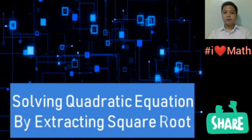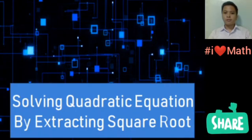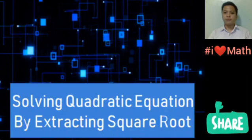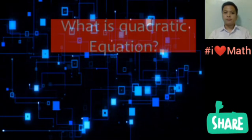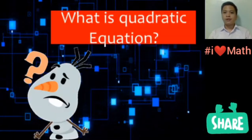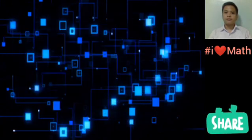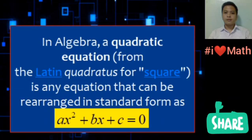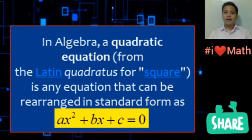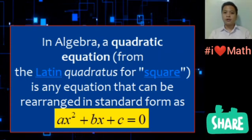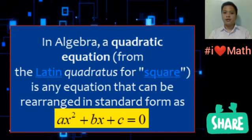Our lesson for today is about solving quadratic equations by extracting square roots. But what is a quadratic equation? Let us define it first. In algebra, a quadratic equation — from the Latin 'quadratus' for square — is any equation that can be rearranged in the standard form as ax² + bx + c = 0.